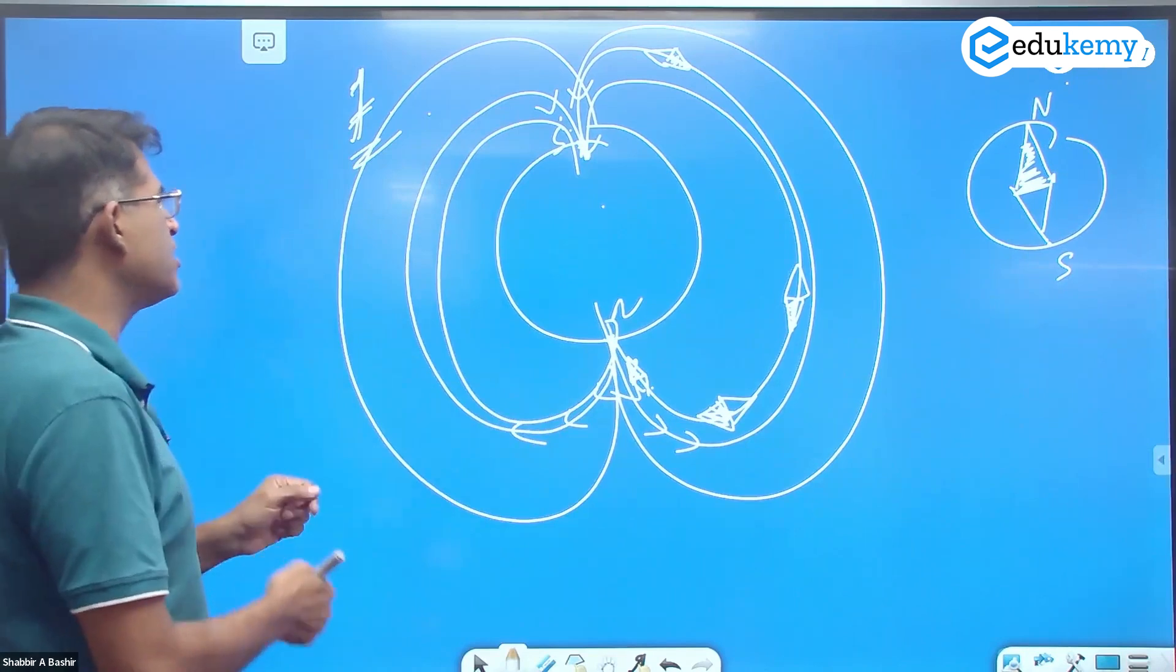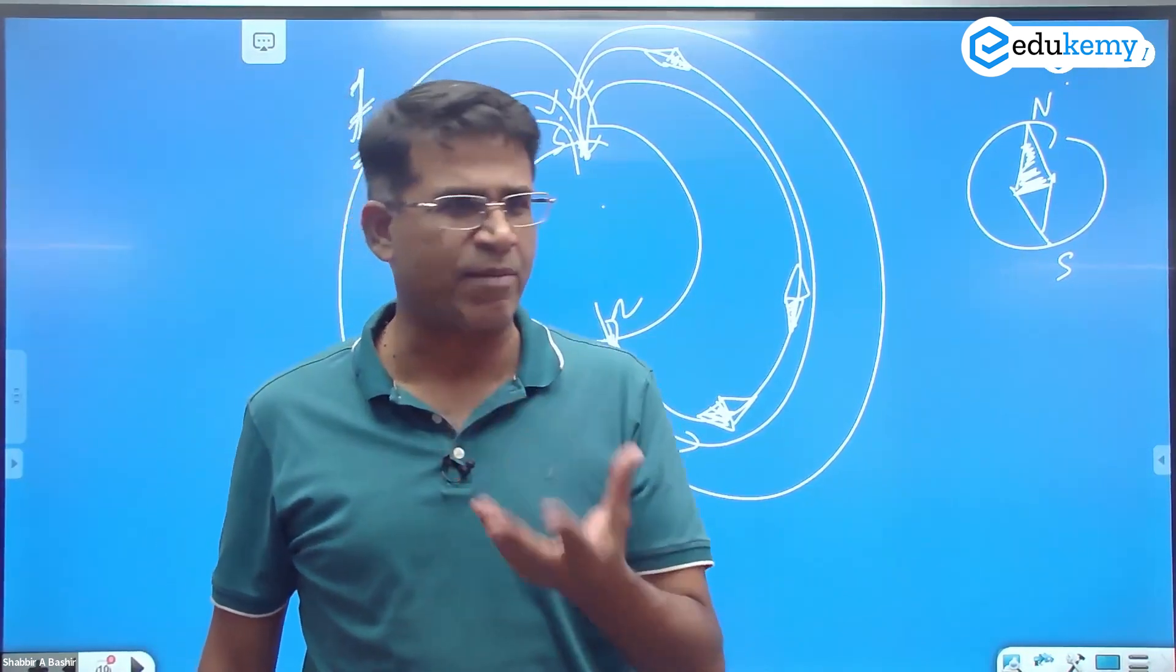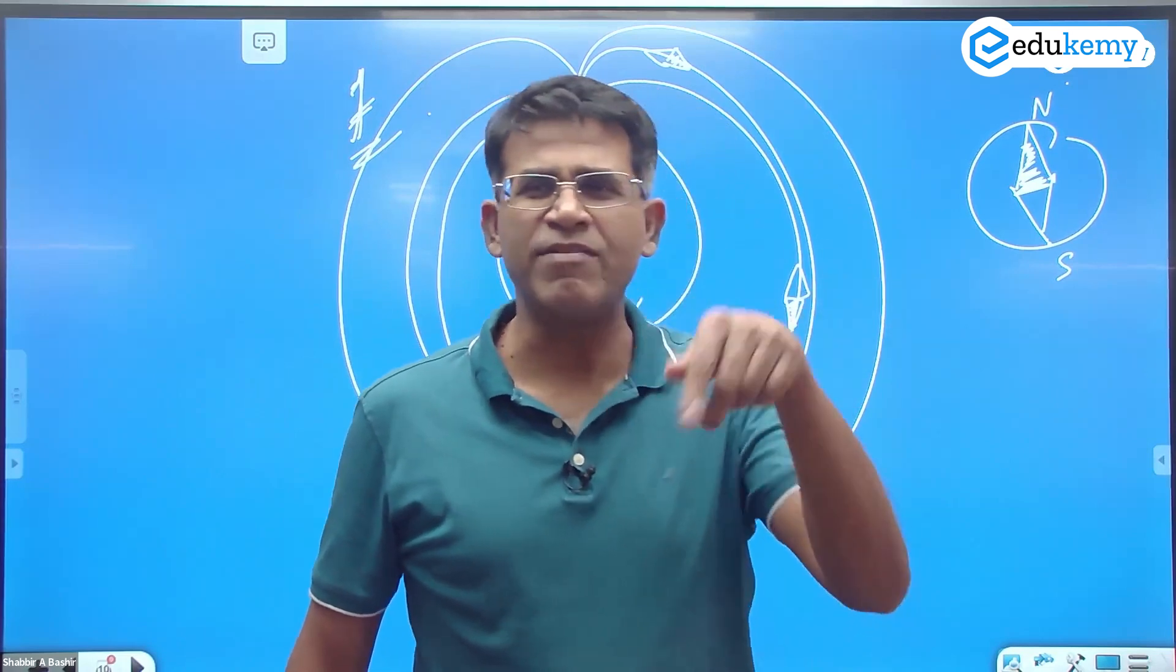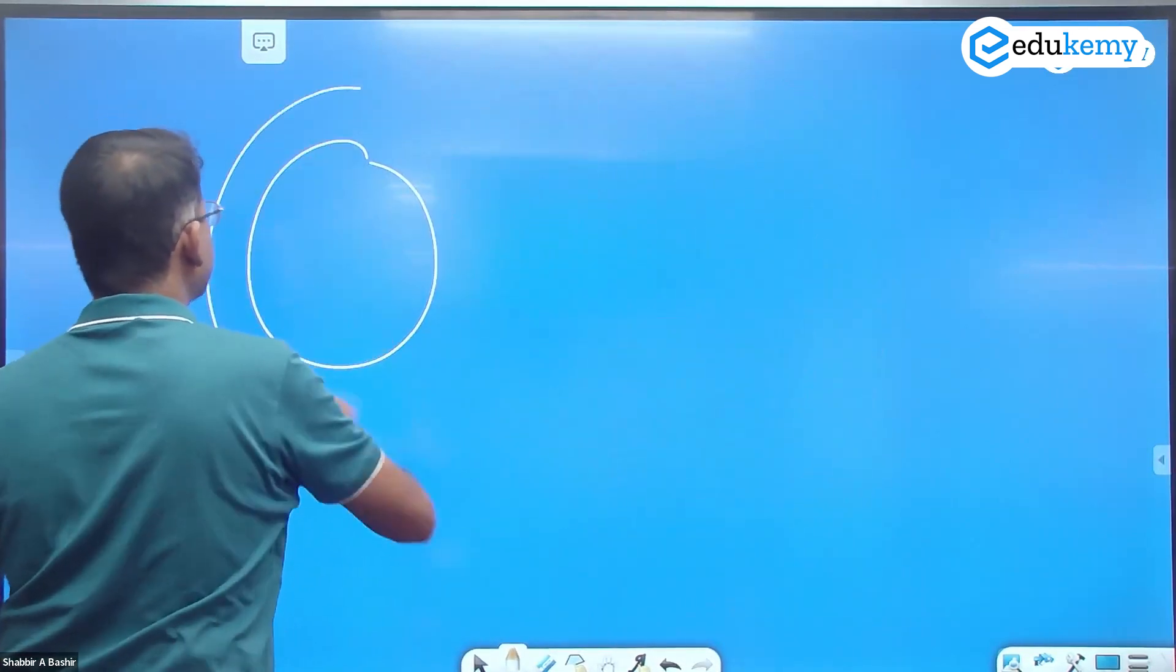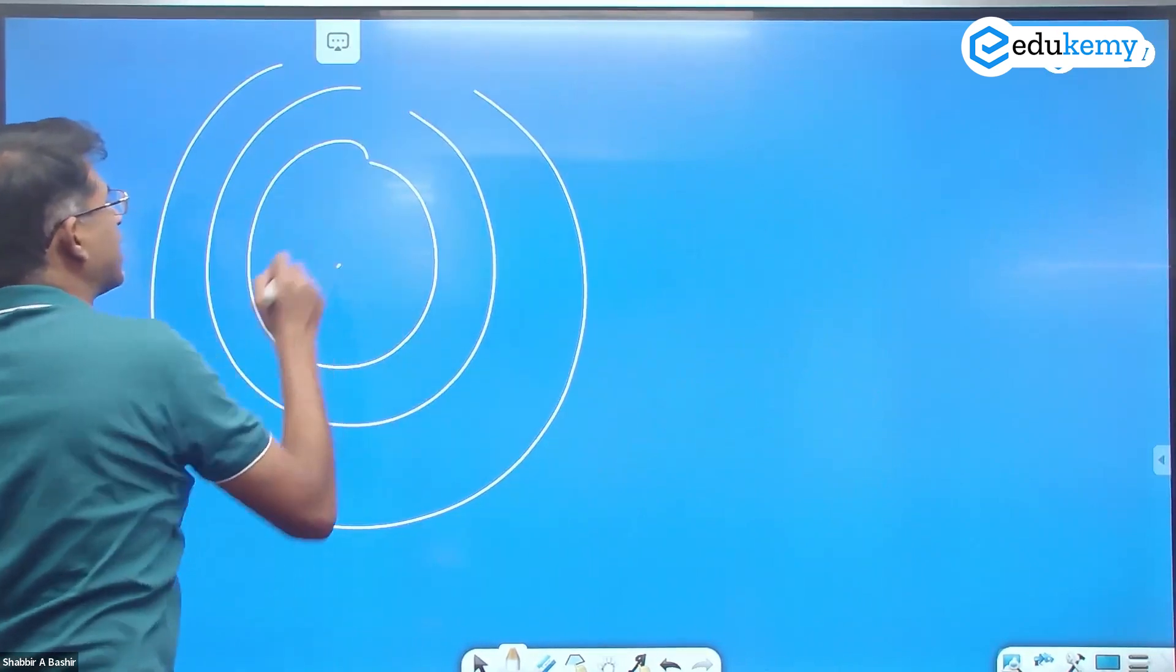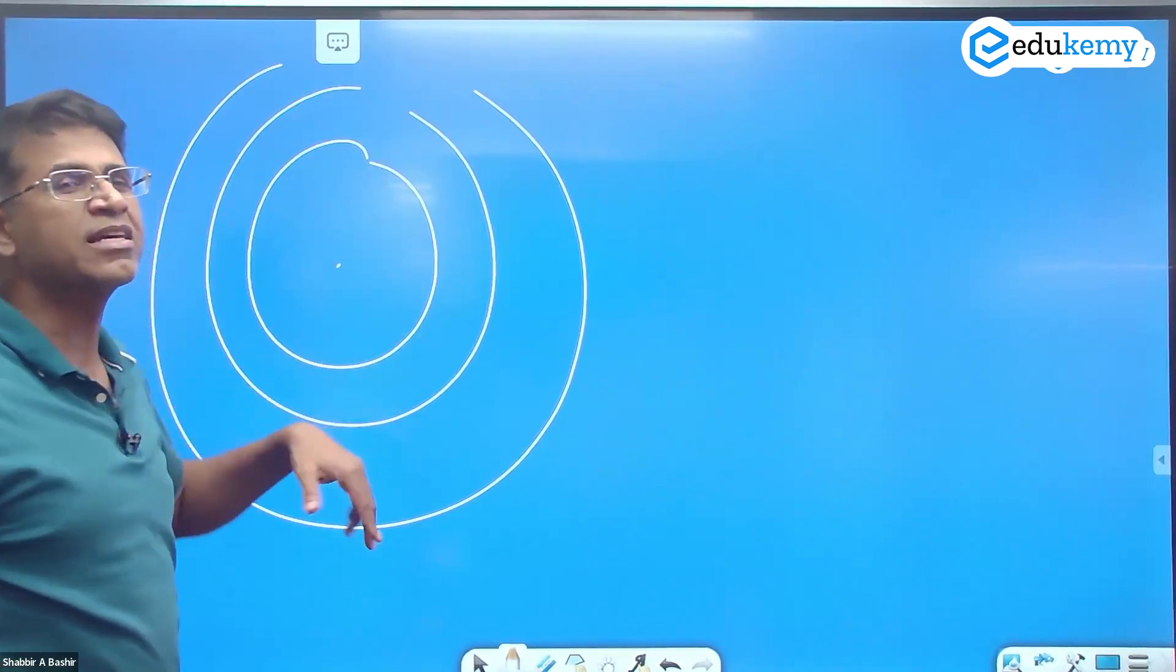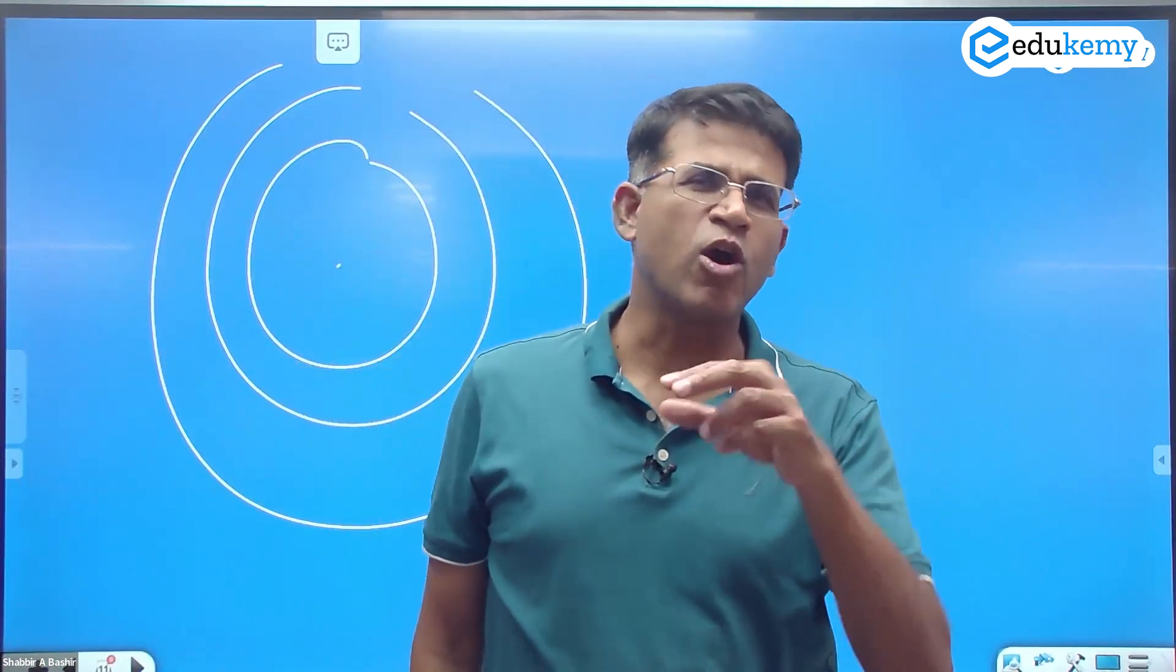Now the point of conversation here is that these lines are not concentric on the earth. The lines have a same center. So if this is the earth and the lines are like this and all of them have the same center, we call these lines as concentric lines. Can as in same, centric as in center, so they all have the same center.